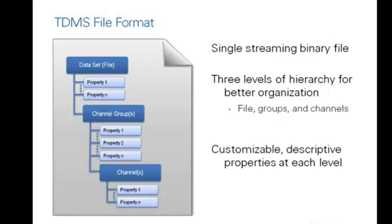The file level can contain an unlimited number of groups, and each group can contain an unlimited number of channels. Because of this channel grouping, you can choose how to organize your data to make it easier to understand. For example, you may have one group for your raw data and another group for your analysis data within one single file, or you may have multiple groups that correspond to sensor types or locations.